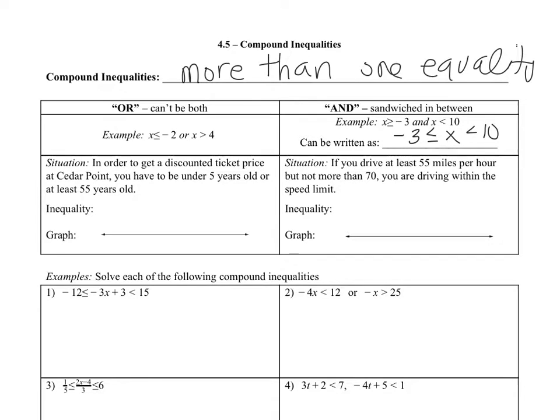There's compound inequalities in real life. Here's an example. In order to get a discounted ticket price at Cedar Point, you have to be under five years of age or at least 55 years old. So your inequality is x is less than five or x is greater than or equal to 55. I make an open dot at five and shade to the left, then a closed dot at 55 and shade to the right. This represents all the people that get a discount.